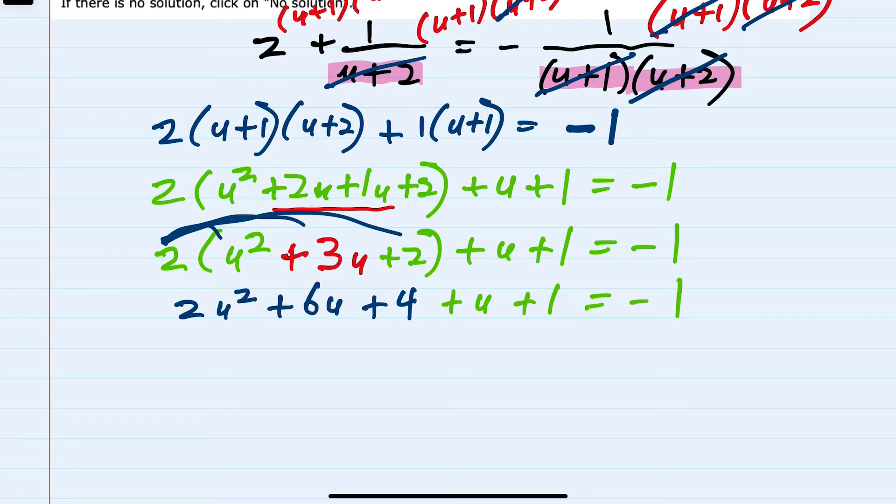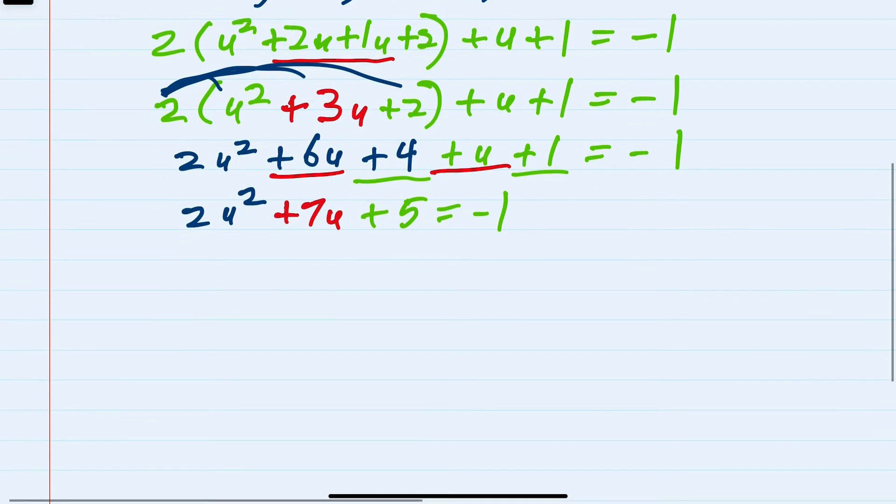I still have like terms on the left-hand side, so I'm going to combine where possible. I only have one u squared term, so that's 2u squared. But the 6u and the 1u can be added as 7u. And the 4 and the 1 can be added as plus 5. And we're closer to having this solved.